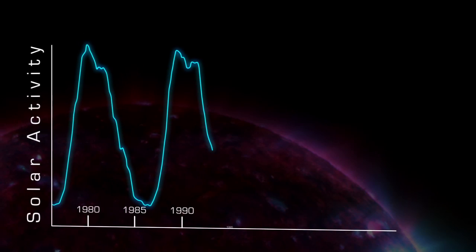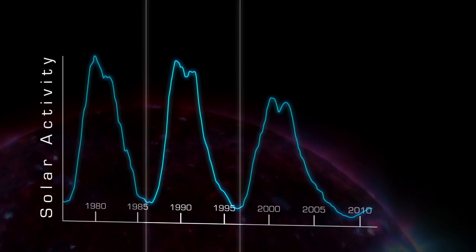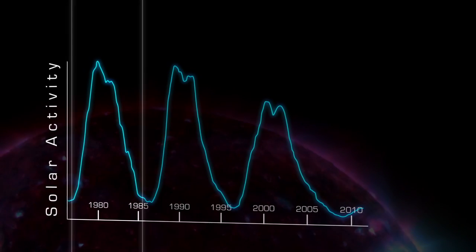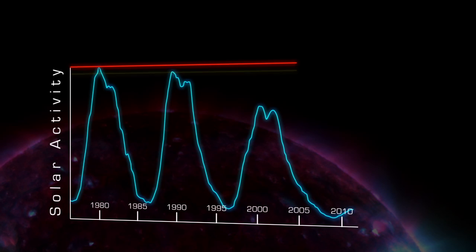This pattern is called the sunspot cycle, and a single cycle lasts for about 11 years, although it can be as short as 8 or as long as 14, and it can vary dramatically in intensity.